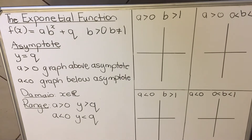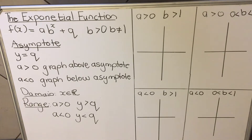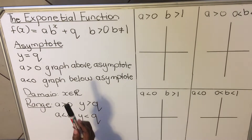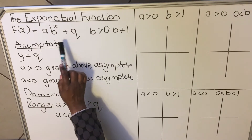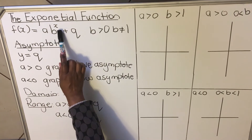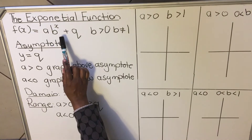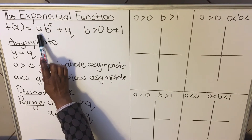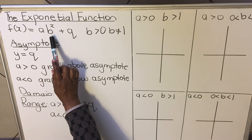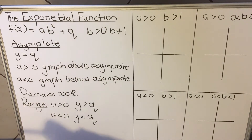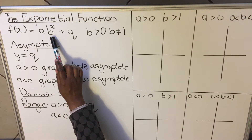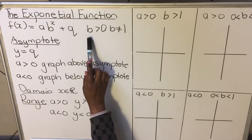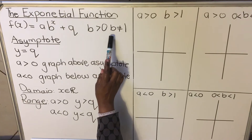Hello Grade 10s, this is the lesson on the exponential graph. The exponential graph has the formula y = a·B^x + Q. That's how you know it's an exponential graph — the X will be an exponent. A is a constant, meaning a number; B is a number; and Q is a number. On B, you'll have an X as an exponent.